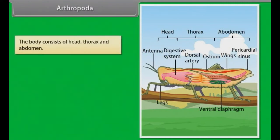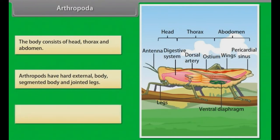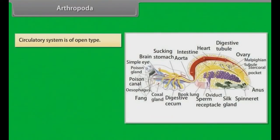The body consists of head, thorax and abdomen. Arthropods have a hard external body, segmented body and jointed legs. Respiratory organs are gills, book gills, book lungs or tracheal system. The circulatory system is of open type.